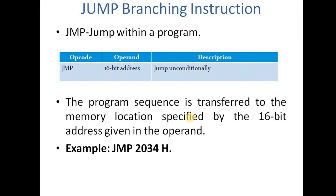Ab hum yahan dekhte hain unconditional jump. Opcode hai JMP — jump within a program. Matlab ek program jisme humne sequential instructions likhe hue hain, toh woh usi program ke andar kisi aur location par jump karega. Jiska opcode hai JMP aur jiska operand hai 16-bit address, aur yeh kya kaam karta hai — jump unconditionally. Matlab bina test case check kiye jump karega. So, the program sequence is transferred to the memory location specified by the 16-bit address given in the operand. Program sequence jo normal execution kar raha hai, wahaan se kisi aur location par — jo ki humne operand mein di hui hai, 16-bit address — wahaan par jaakar jump karega. Aur yahaan humne koi condition check karni hi nahi hai, directly hum har case mein jump karna hi hai. Example: JMP 2034H — H kya bata raha hai yeh hexadecimal number hai, hamaara 2034, aur yeh 2034 jo hai woh 16-bit address hai jo ki hexadecimal mein present hua hai. Jab bhi yeh is tarah ka instruction aata hai hamare program mein, iska matlab hai ki aapko is location par jaakar jump kar jaana hai. Aap jahaan par bhi hain, jis bhi line par hain, wahaan se next instruction jo execute karna hai woh hamaara hoga 2034 location par likha hua instruction. Toh is tarah se jump unconditionally kaam karta hai.